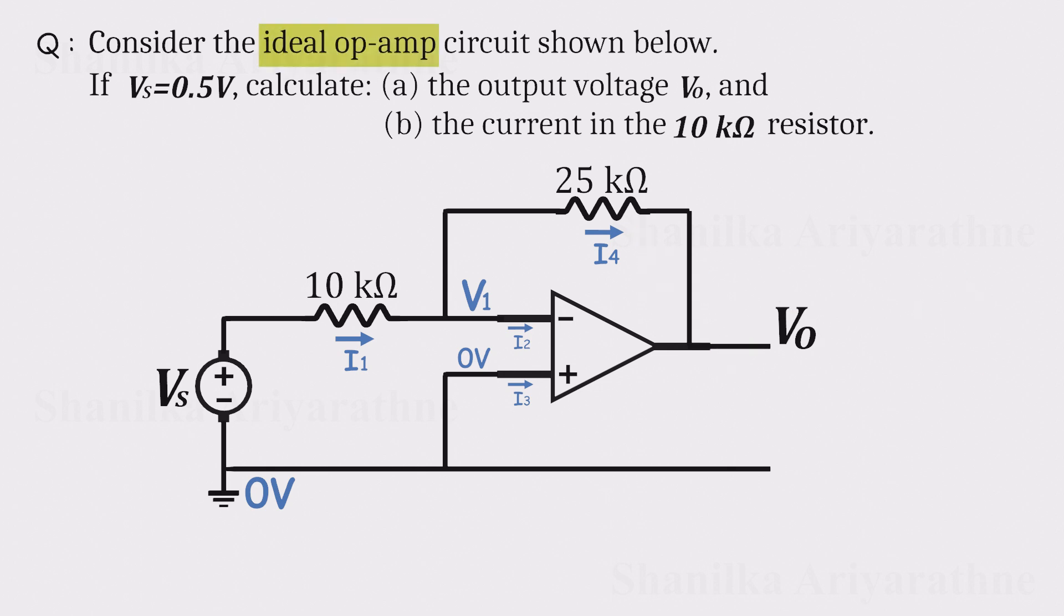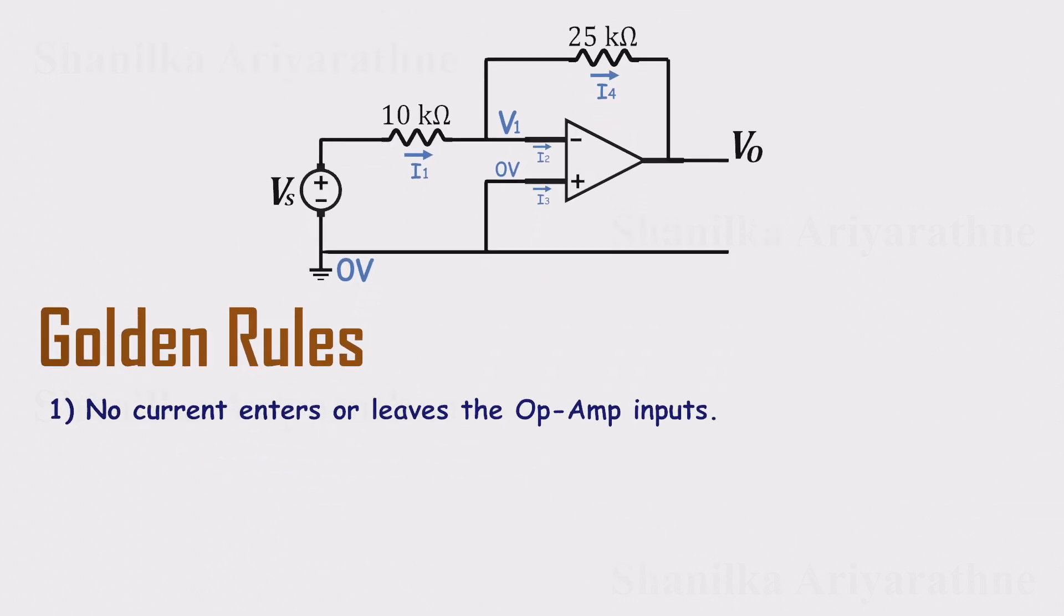Now since this is an ideal op-amp, we can apply the two golden rules that always hold in a negative feedback configuration. Golden rule 1: No current flows into the op-amp inputs. That means I2 and I3 are both 0.